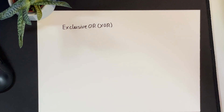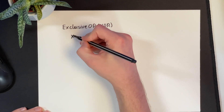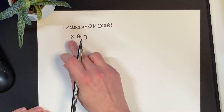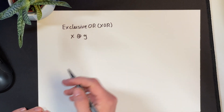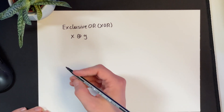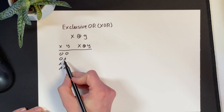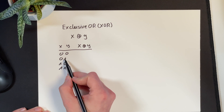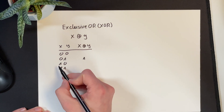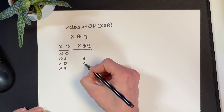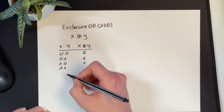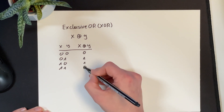You can construct any logic expression by combining AND, OR and NOT. An often-used operator in computer science is the exclusive OR, or XOR. XOR combines two Boolean terms X and Y and is only true when X and Y have different values. In the truth table, only the lines where X is 0 and Y is 1, or X is 1 and Y is 0, evaluate to 1.